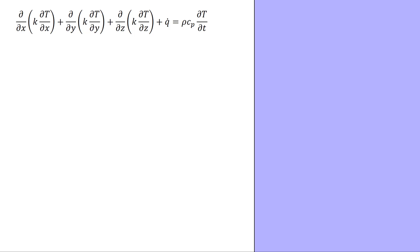Let's explore a problem in heat transfer known as a semi-infinite solid. In this situation we've got some solid with a coordinate direction x to the right, coordinate direction y upward, and a coordinate direction z coming out of the screen. The dimensions y and z go infinitely far in their respective directions, but x starts at x equals zero and only goes infinitely far to the right. We're trying to figure out the temperature of our solid as a function of both x and time.